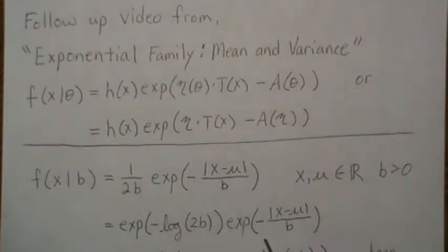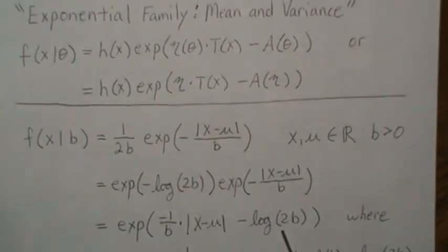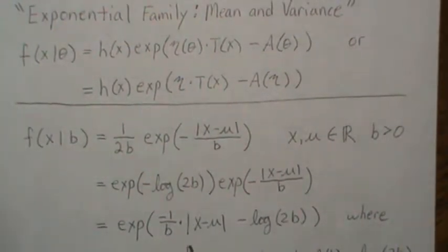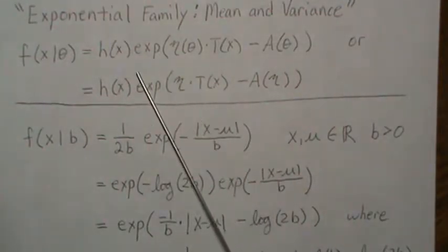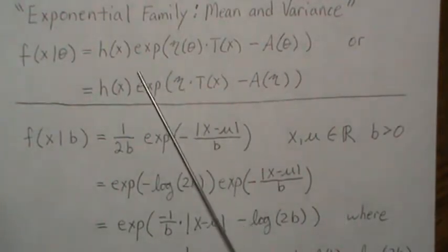Here, we have the product of 2 exponentials, so we just add the exponents, and this is what we get. I write this first and that second, because now this is a function of the parameters times a function of